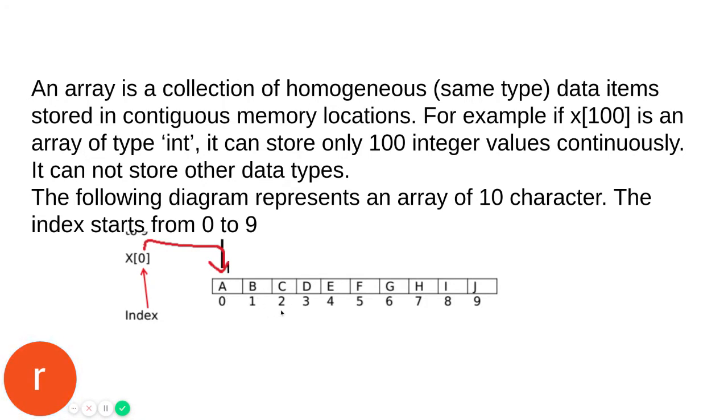They are stored in contiguous memory locations. The next locations store the data consecutively. An array is a collection of homogeneous data, meaning the data type being stored should be of the same type, and they are stored in continuous memory locations.